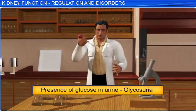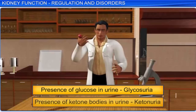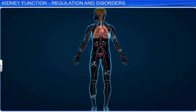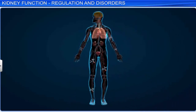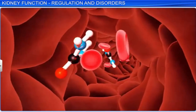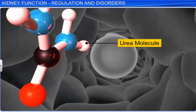For instance, the presence of glucose in urine, which is called glycosuria, is indicative of diabetes mellitus. Moreover, the urine of diabetic patients sometimes shows ketone bodies, which is called ketonuria. The malfunctioning of the kidneys can also cause uremia, a condition where large amounts of urea accumulate in the blood. Uremia can even lead to kidney failure.